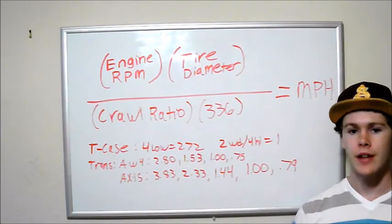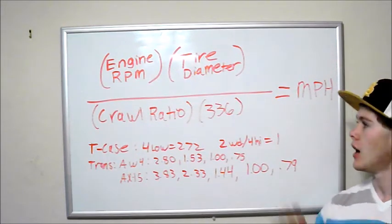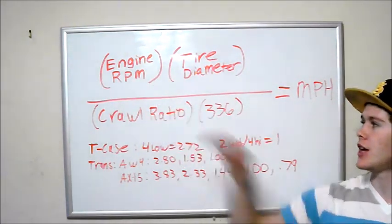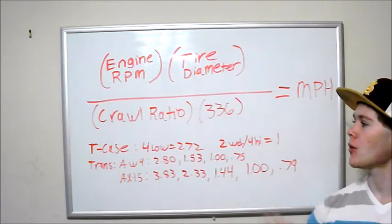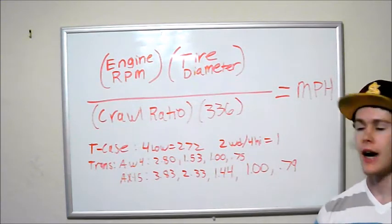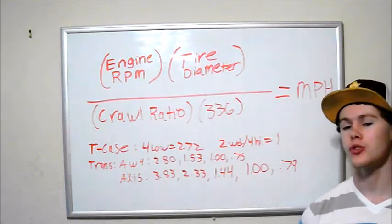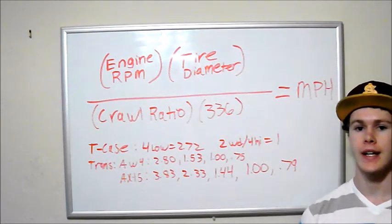So another cool thing we can do now that we know what our crawl ratio is, is we can actually calculate our speed. Here's the equation to do that. You're going to take your engine RPM times your tire diameter, and you're going to divide that by your crawl ratio times 336, and that's going to give you your speed. Now, this equation works if you're in 4-wheel drive low and first gear, you just take your crawl ratio that we already calculated.